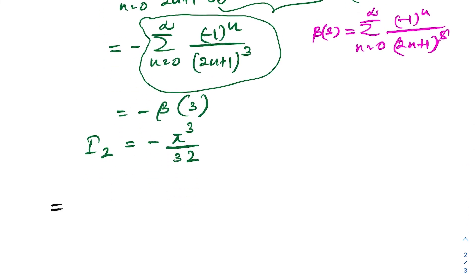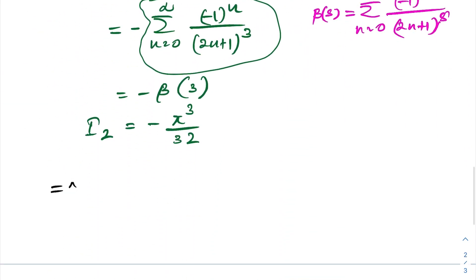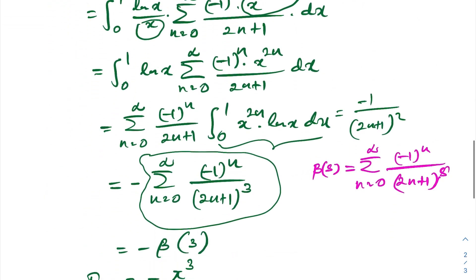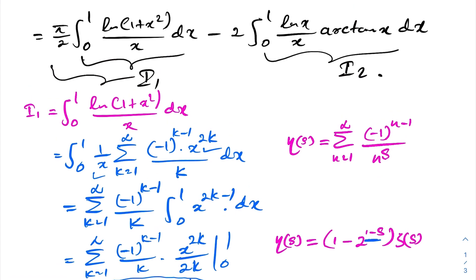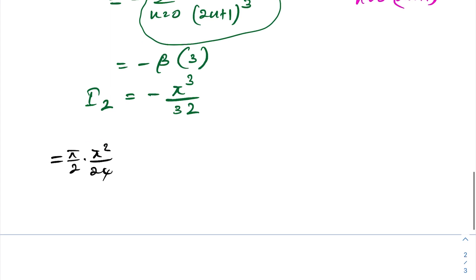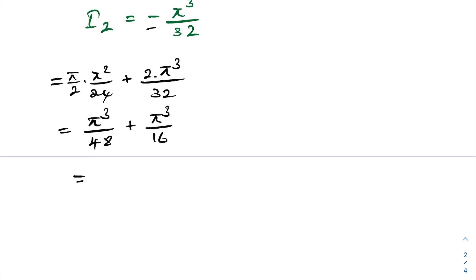Now combining everything: our integral equals π/2 · I₁ − 2·I₂ = π/2 · (π²/24) − 2·(−π³/32) = π³/48 + π³/16. Simplifying: π³/48 + 3π³/48 = 4π³/48 = π³/12. So the final answer is π³/12. If you like this type of video, please subscribe to this channel. Thank you for watching.